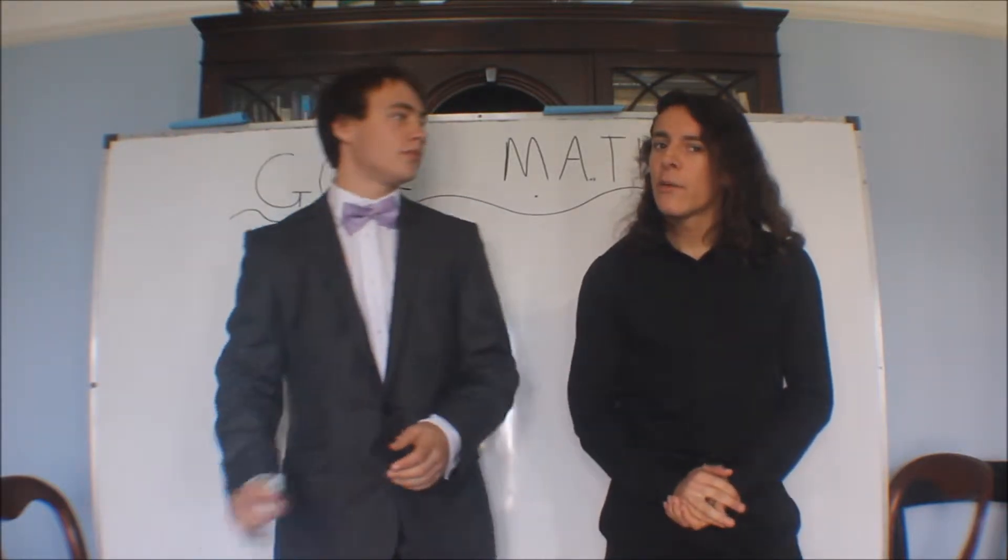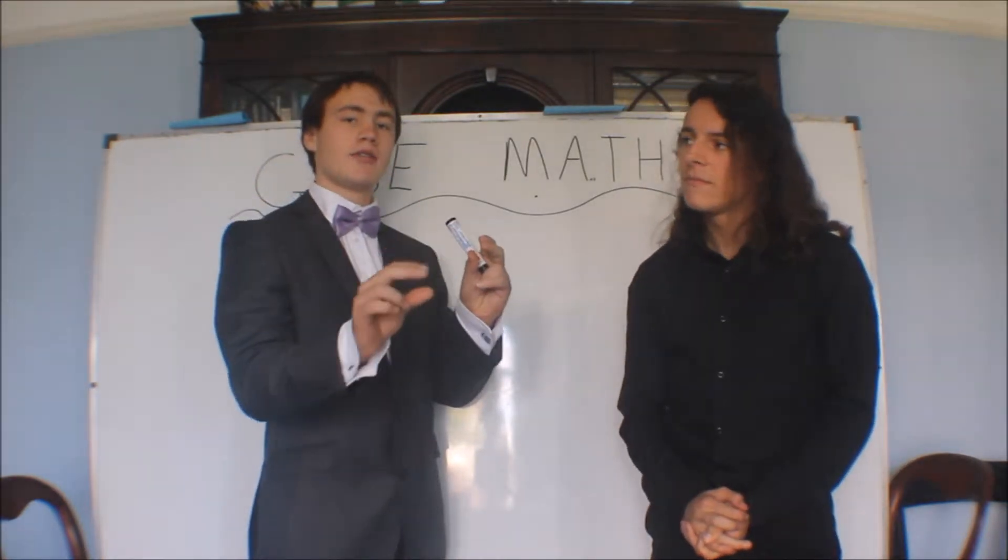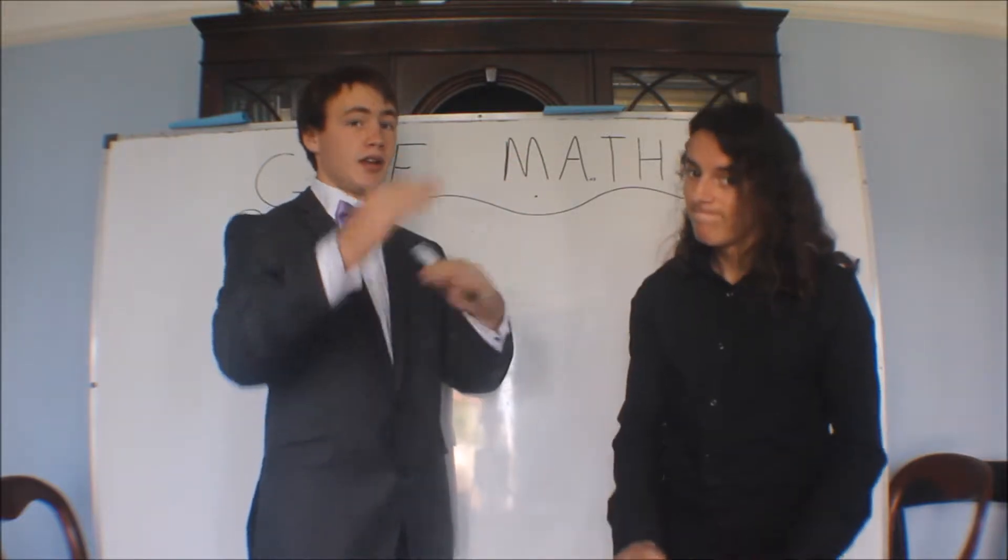And why do we use Upper and Lower Bounds stuff? Well, if something's been rounded and we've got information, but we don't know what it was rounded from, it could be up here, or it could be down here, in between.